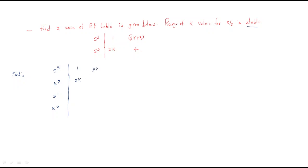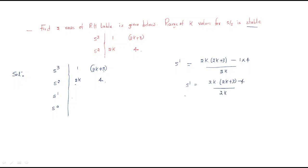The coefficients for the given rows are 1, 2k, (2k+3), and 4. We now compute the s-power-1 coefficient: it is (2k × (2k+3) − 1 × 4) divided by 2k, which simplifies to (2k(2k+3) − 4) / 2k. The next coefficient for s-power-0 is directly 4. The system is stated to be stable.